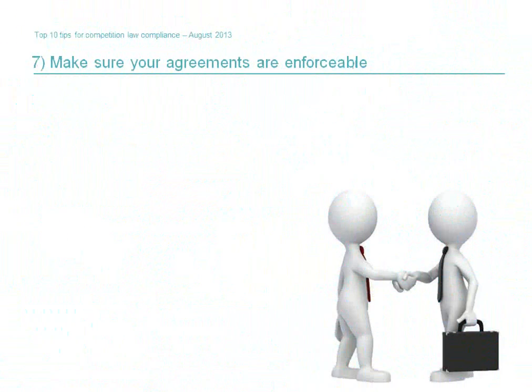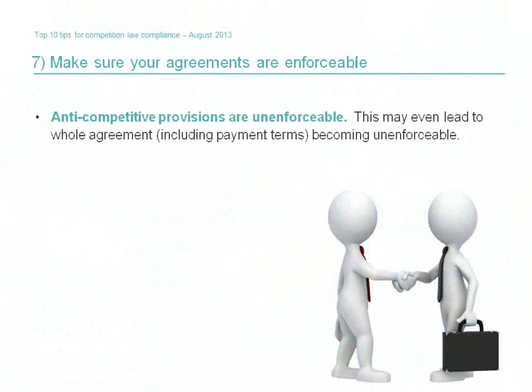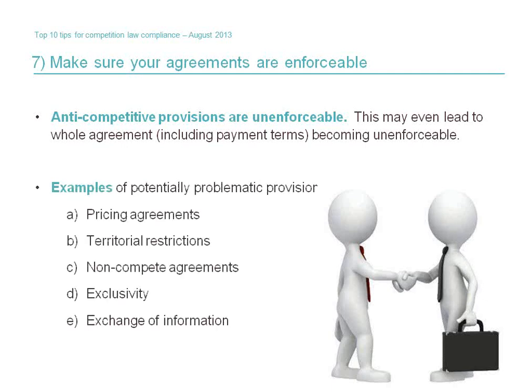Tip number seven: make sure your agreements are enforceable. A very important practical consequence of including anti-competitive terms in commercial agreements is that the agreement as a whole may be potentially unenforceable — the last thing anyone wants when significant amounts of money are riding on the contract. Examples of contractual provisions which competition law may render unenforceable include minimum pricing agreements, prohibitions on selling outside a particular territory, non-compete agreements, some exclusive dealing agreements, and the exchange of commercially sensitive information. Agreeing to exchange commercially sensitive information, particularly on a regular basis over time, and particularly where future prices or commercial strategies are divulged, is particularly risky.